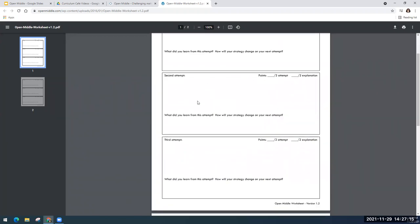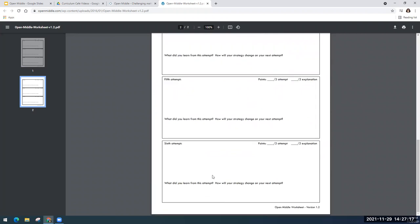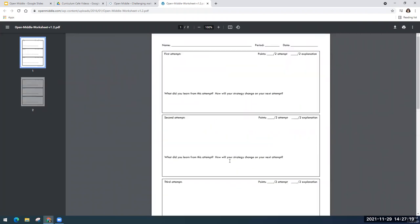What's cool about this worksheet is that students get two points per attempt and then two points for each explanation. So obviously the more attempts they take, the more points they could potentially get. And so this really gets them to not focus on trying to get it on their first try, but really paying attention to the attempt that they're taking.